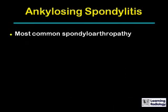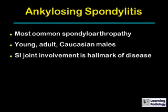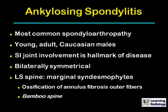Ankylosing spondylitis is the most common spondyloarthropathy. It usually occurs in young adult Caucasian males. The sacroiliac joints are invariably involved and are the hallmark of the disease. The fusion is usually bilaterally symmetrical. In the lumbar spine, we see marginal syndesmophytes — ossification of the outer fibers of the annulus fibrosis — producing the so-called bamboo spine.